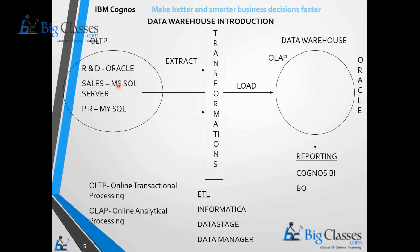These individual databases are called operational data sources. All of them together are called the operational source system — the total thing is a source for the data warehouse.